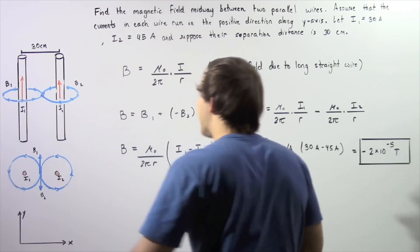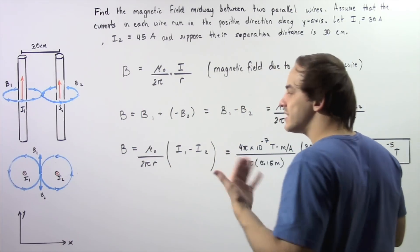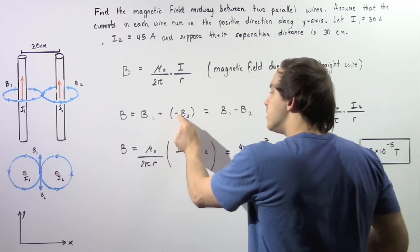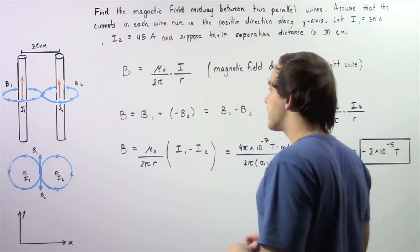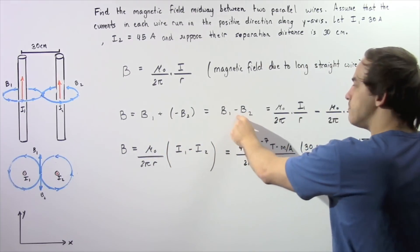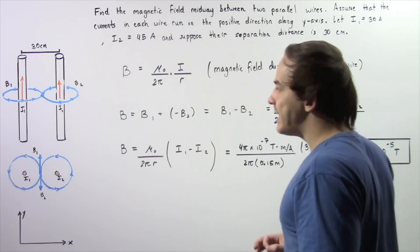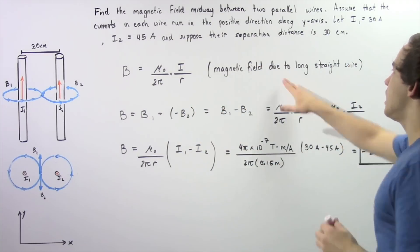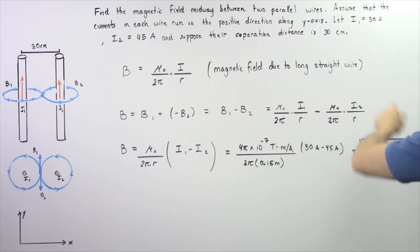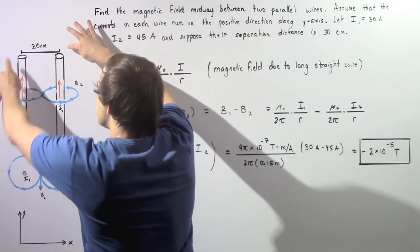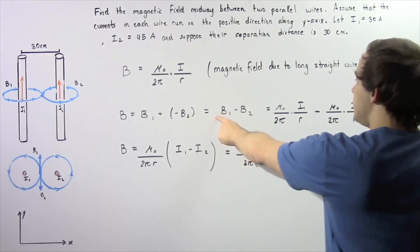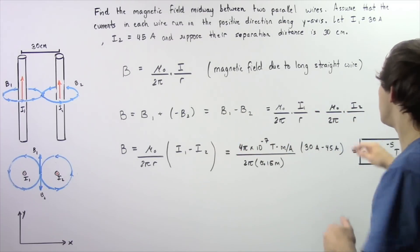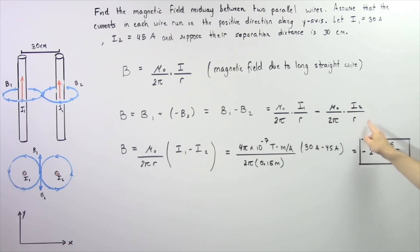We choose upward as positive and downward as negative. We take the algebraic sum of the two magnetic field vectors: B1 plus negative B2. The negative comes as a result of B2's opposite direction, so the expression becomes B1 minus B2. Recall that the magnitude of the magnetic field from a long straight current-carrying wire gives us the magnitude for each contribution.